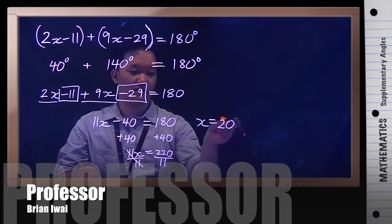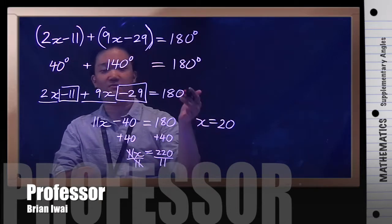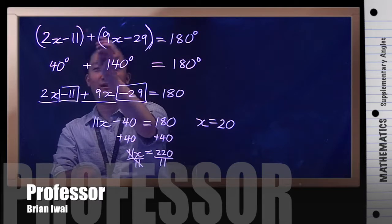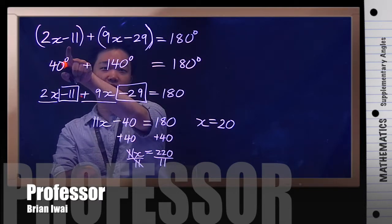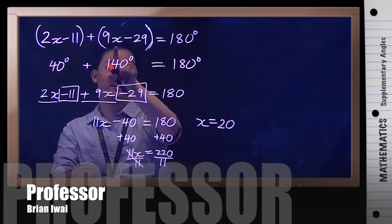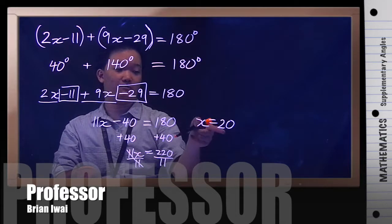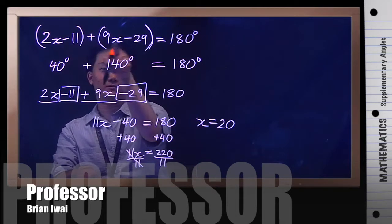So is that our answer? Not really, because remember we want to find two angles, one that's expressed by 2x minus 11 and another that's expressed by 9x minus 29. So we have to plug 20 back into these two expressions.